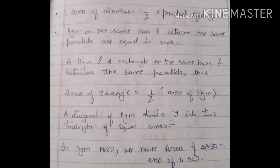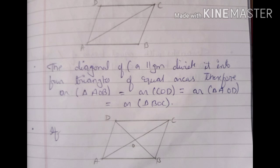A diagonal of a parallelogram divides it into two triangles of equal areas. In parallelogram ABCD, the area of triangle ABD equals the area of triangle ACD. Furthermore, the diagonals of a parallelogram divide it into four triangles of equal areas — triangles OAB, COD, AOD, and BOC are all equal in area.